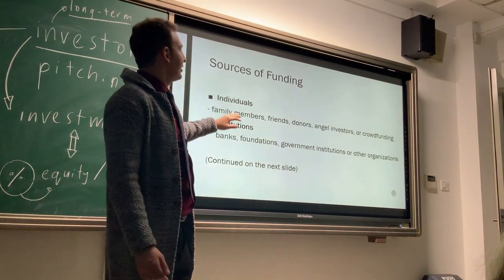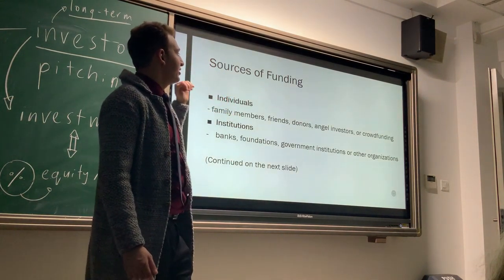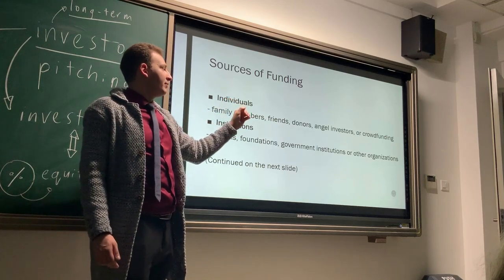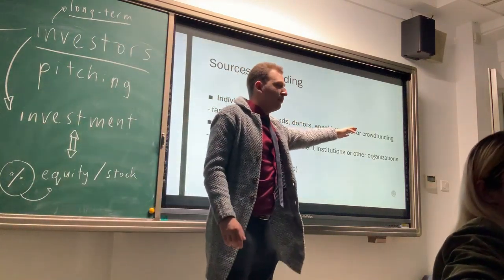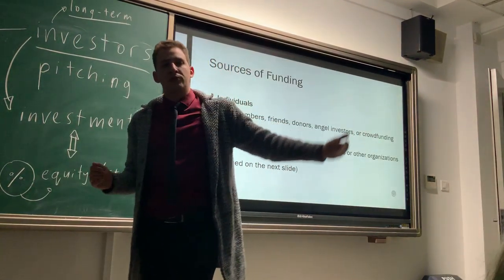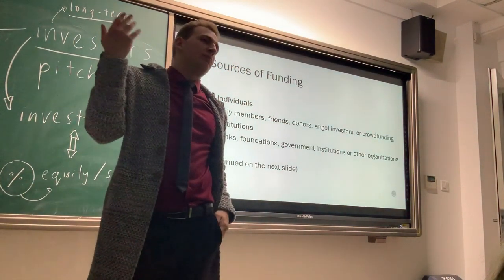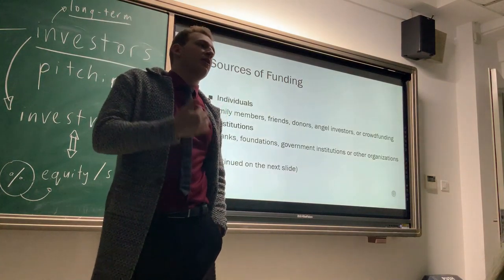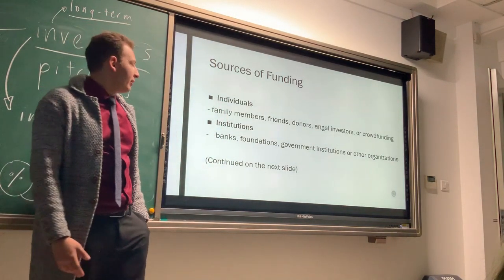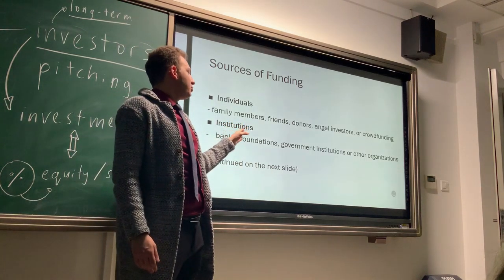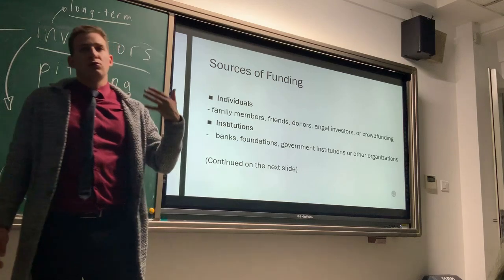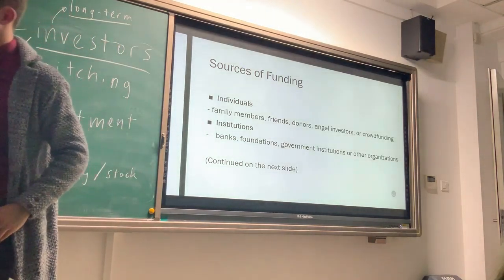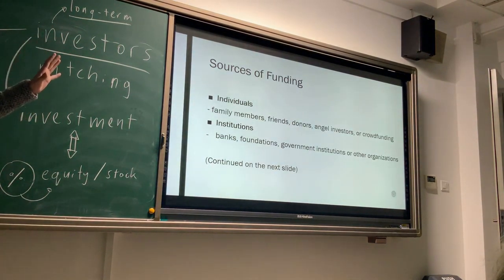Generally there are three types of sources of funding. Number one is individuals — these might be family members, friends, donors, high net worth individuals, angel investors, or crowdfunding, which means you can get users to pre-purchase your product or donate money. You can also get institutions such as banks, foundations, government institutions, or other organizations funding your business.